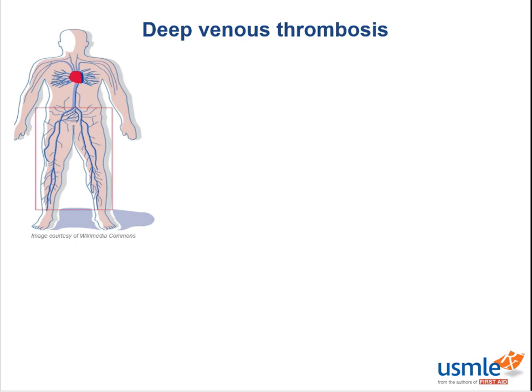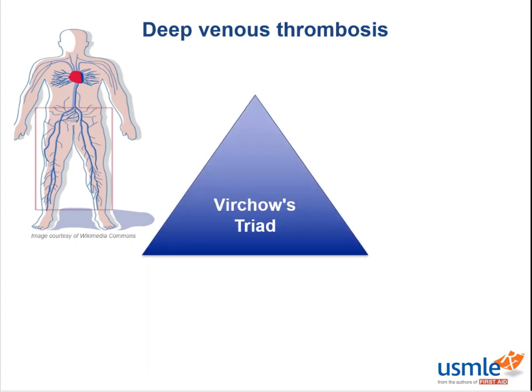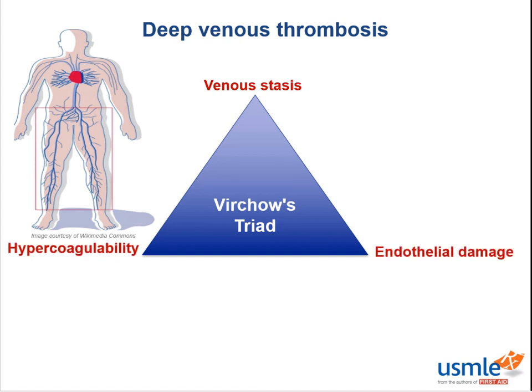Okay, unlike arteries, these aren't clots that develop from atherosclerosis. So if it's not atheromas, what makes someone develop clots in their veins? The development of a DVT happens through Virchow's triad — that is venous stasis, hypercoagulability, and endothelial damage. In other words, you're getting inappropriate activation of the coagulation cascade.